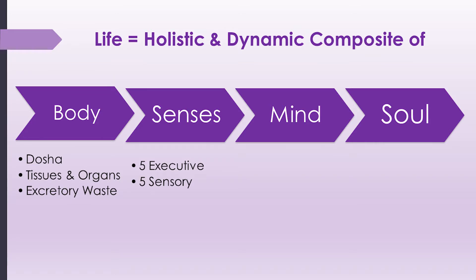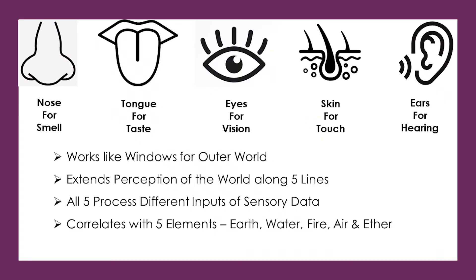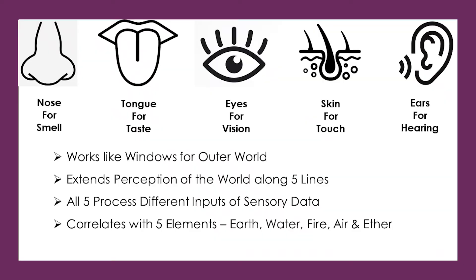The next aspect of the holistic nature of life is the senses. Ayurveda uses the word 'indriya' — ten in total, five for sensory inputs and five executive in nature. The five sensory indriyas are: nose for smelling, tongue for tasting, eyes for seeing, skin for touch, and ears for hearing. Together, these act like windows to the outer world, allowing us to perceive five different aspects of it. This sensory data is then processed through the nervous system.